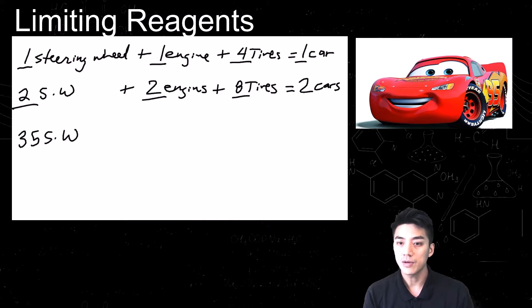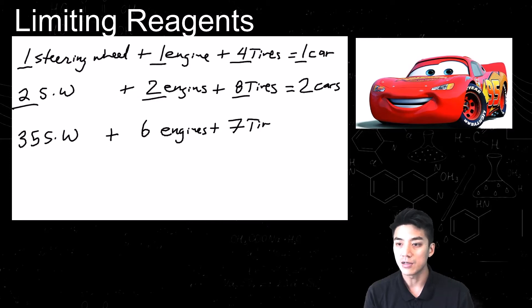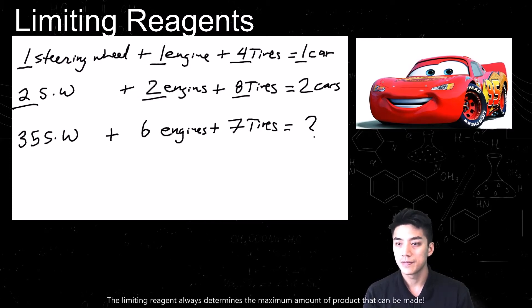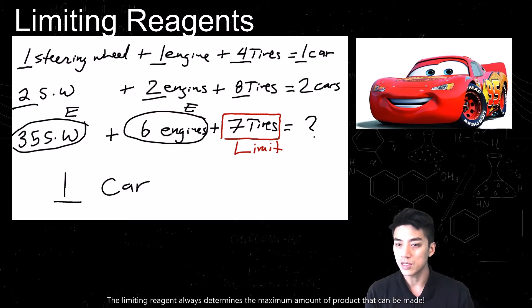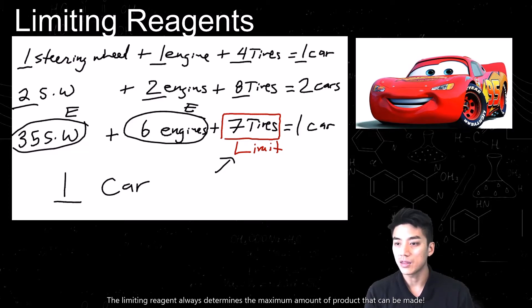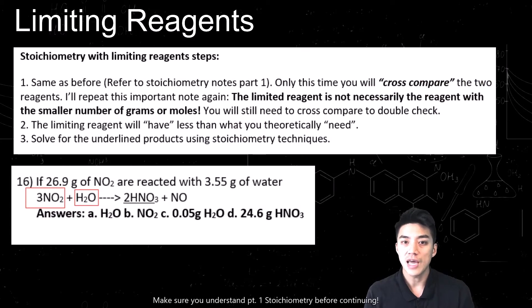Now, if I brought in 35 steering wheels, six engines, and seven tires — how many cars can I make? The answer, which might come as a surprise, is actually just one car, because I am limited by the amount of tires that I have. Seven tires is not even enough to make two cars. So my tires are the limiting reagent. It doesn't matter if I have 35 steering wheels or six engines — those are in excess. I'm limited by the amount of tires, which means I can make, at the most, just one car.